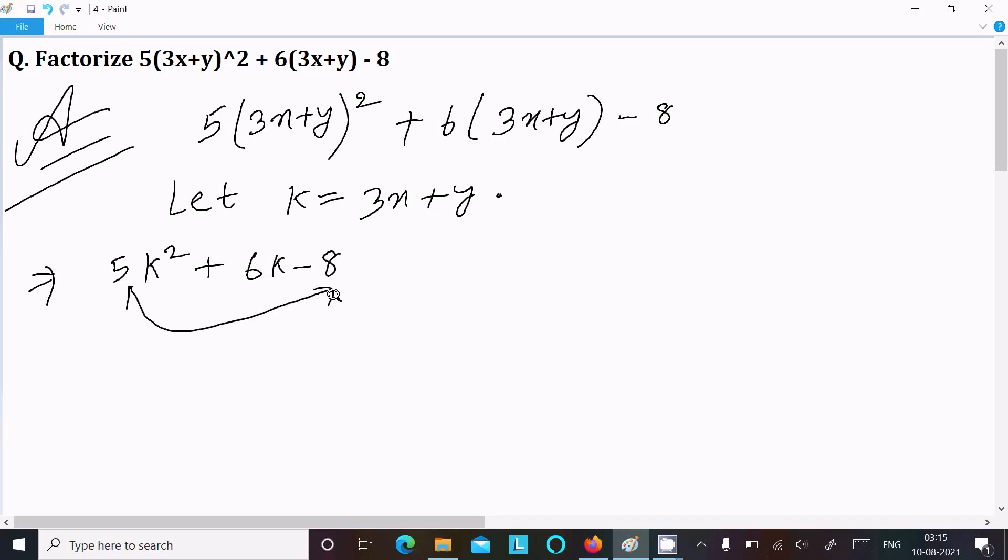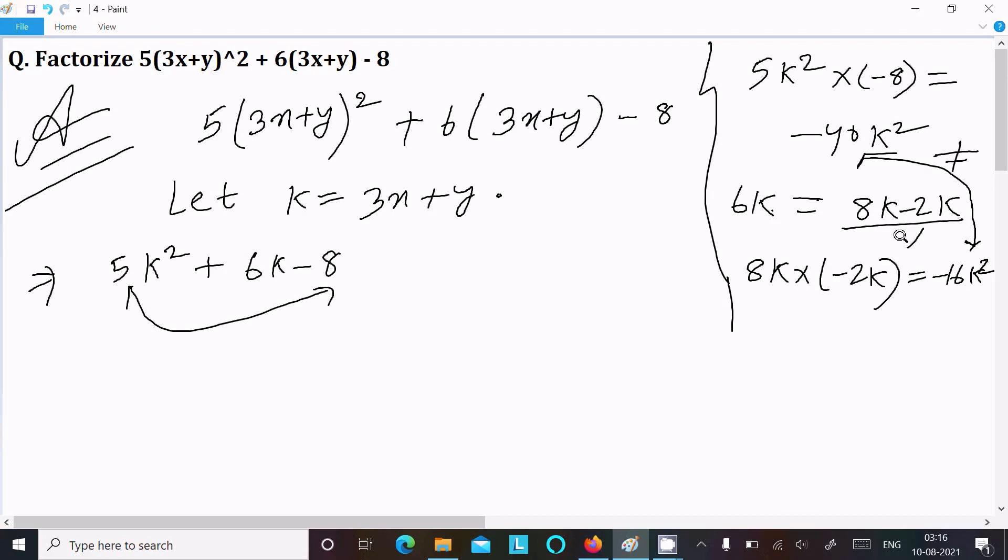After that, first term and the last term we need to multiply. So here 5k² into -8 gives -40k². After that take the middle term and break into two parts. So here 6k we can write as 8k - 2k. If you subtract it equals 6k, but when you multiply 8k into -2k it comes -16k². So these two are not the same, not equal, so we cannot take this combination.